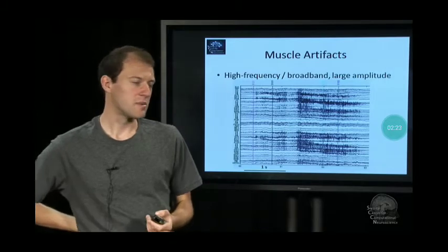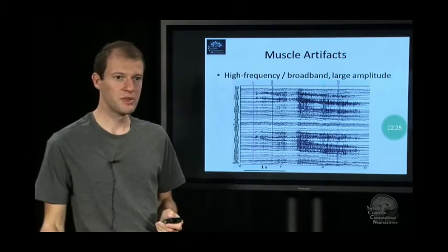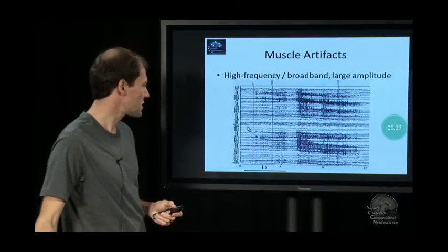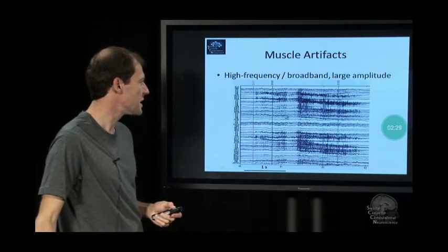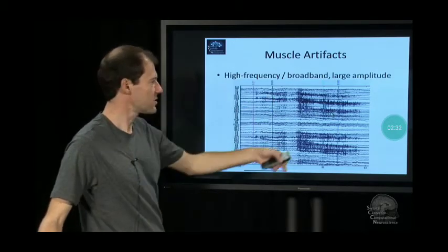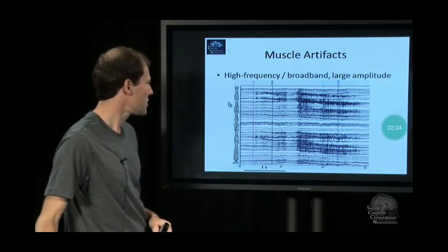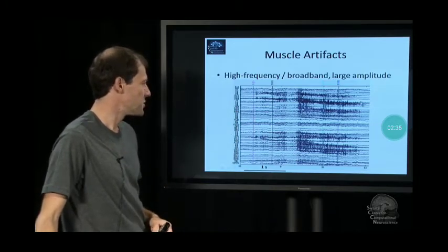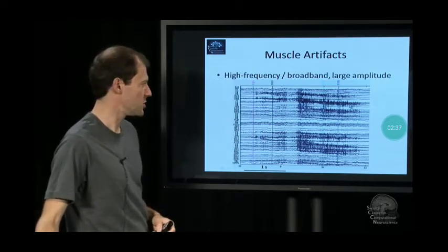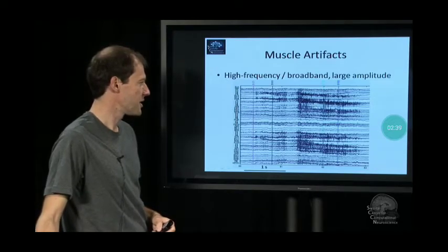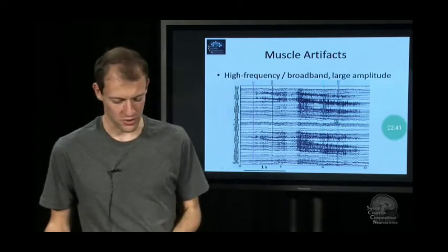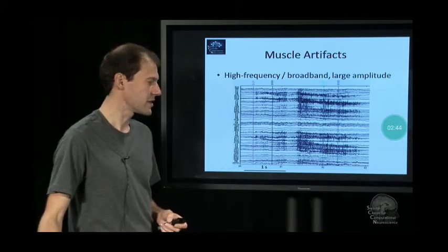And so here's a couple of actual plots. These are muscle artifacts. You have some EEG at the beginning, and then some muscle turns on in the raw channels. Here's the channel labels over here. You see how strong these are with respect to EEG. There's nothing visible underneath. Although we do have some algorithms, and other people have developed algorithms to get rid of these things.